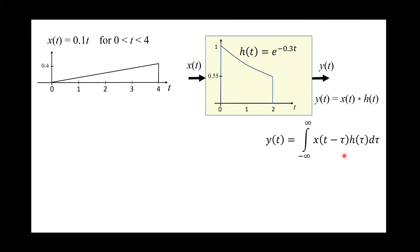What is the physical meaning of the convolution integral? And why are we using tau in addition to t? We need the variable tau in the convolution integral because the output at t, which is the present time, will depend on the input in the present and in the past. So t in the integral is a constant representing the present input and present output, and tau represents the past, the present, and the future.